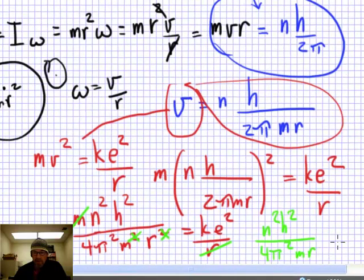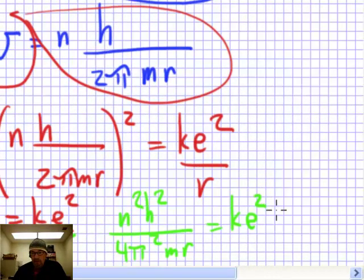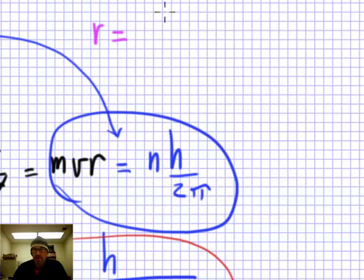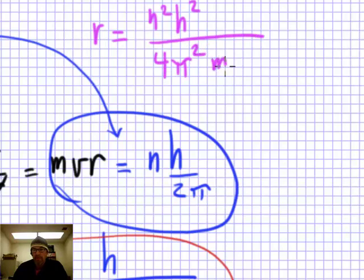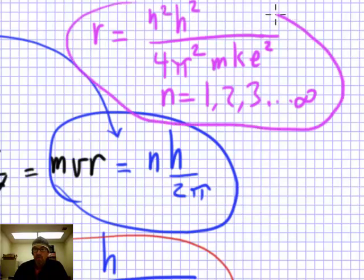Solving for the orbital radius r: multiply both sides by r and divide by Ke², giving r = n²h²/(4π²mKe²). Since n must be a positive whole number, this equation tells Bohr what size each orbit is. All the other quantities — h, m, K, e — are constants, so the radius depends only on n.